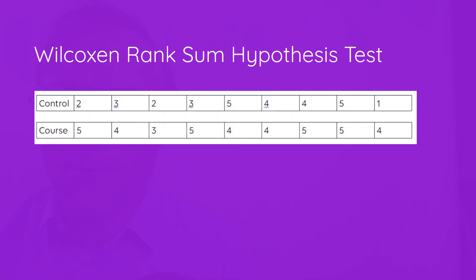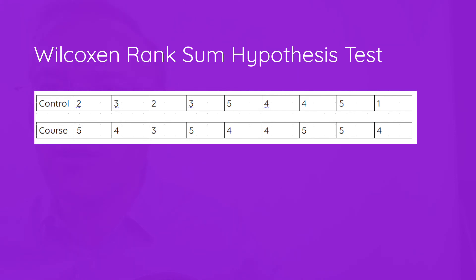Looking at her data: in her control group, nine participants rated their confidence on the same question from 1 to 5. We see a 1, a 2, a 3, and some 5s. Those who took the course appear to have somewhat higher ratings. These are 18 different people — nine in the control group and nine in the course group — unlike our previous paired analysis.